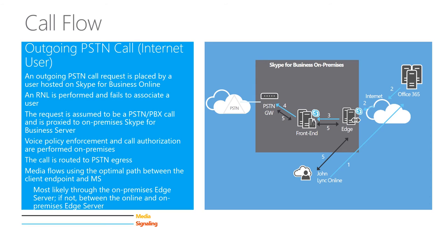Very similar example — now John is external to the network and homed in Office 365, wanting to call a PSTN number. He dials the number; the signaling goes to Office 365. Office 365 performs a reverse number lookup — no match — so it's a PSTN call. Signaling goes via the federation edge server to the front-end server, where call authorization and routing are done and the call is sent to the PSTN gateway. For the media: since John is external, all media must go to the edge server first, then to the co-located mediation server on the front-end, then to the gateway.